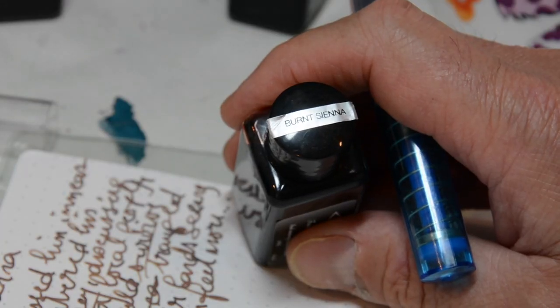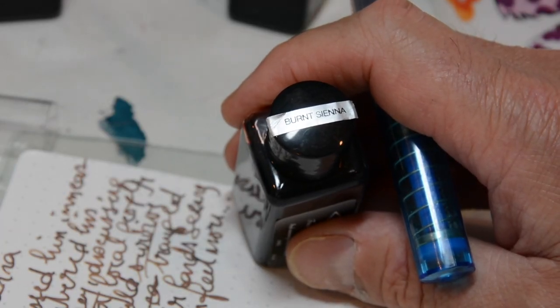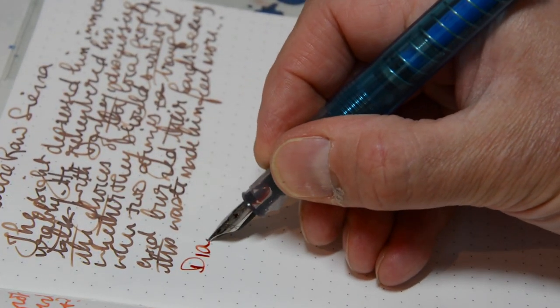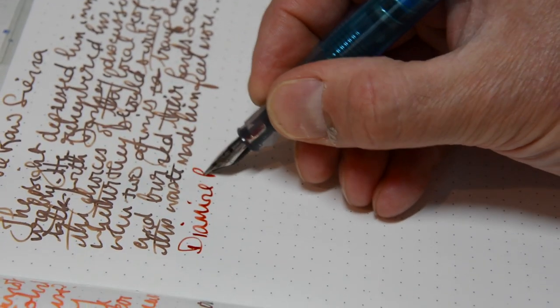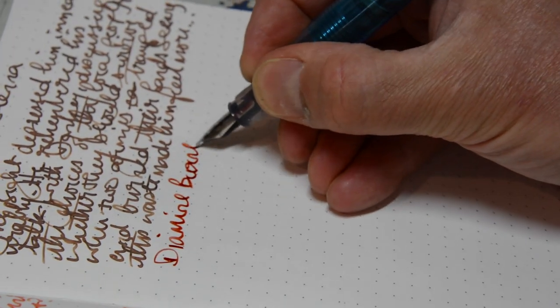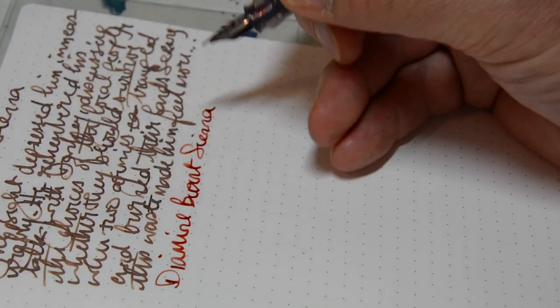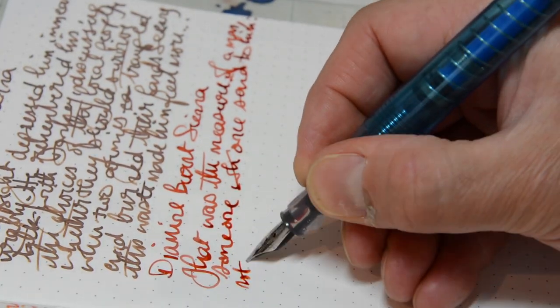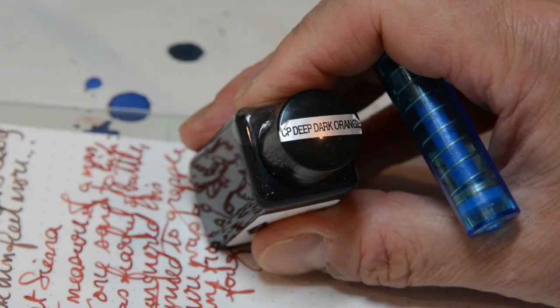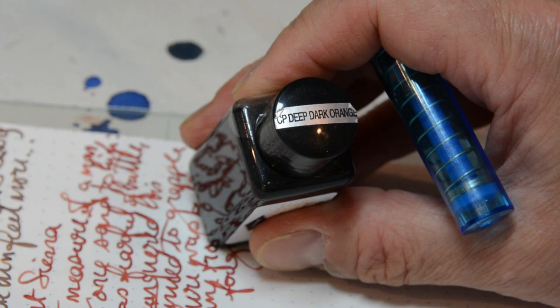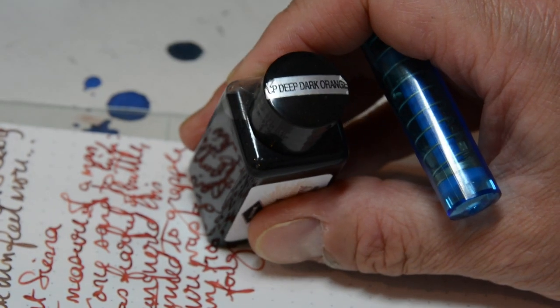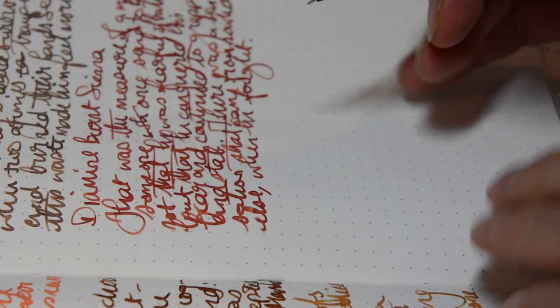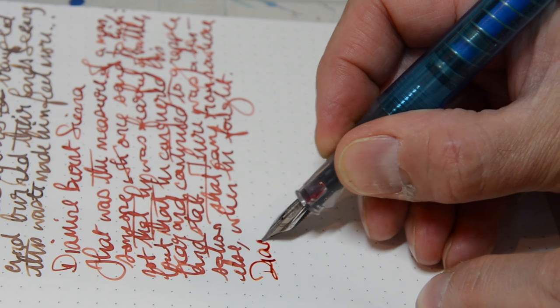And so next up is burnt sienna. After the raw, let's see how this compares. Oh, that's rather nice. Okay, quite surprised about burnt sienna. It's a much more red orangey colour than I was expecting. So let's go to one that should be quite orangey, which is deep dark orange from Cult Pens and Diamine. Although I'll write it the other way round.